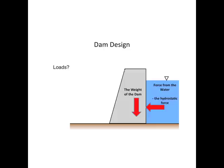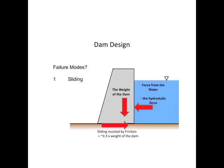So, how can it fail? It could fail by sliding. What stops it sliding is the resistance between the dam and the foundation — we can say that's a third of the weight of the dam. So we must make sure that a third of the weight of the dam is always bigger than the hydrostatic force. If it isn't, that's what happens — it slides.